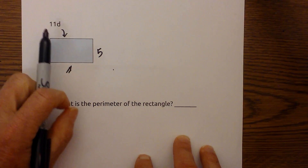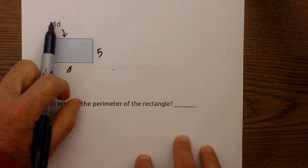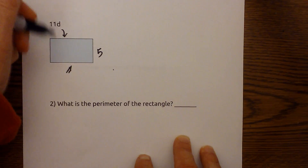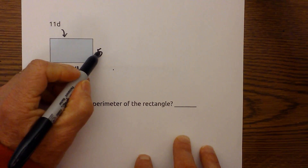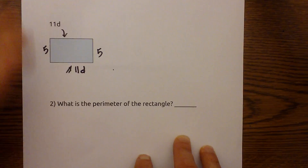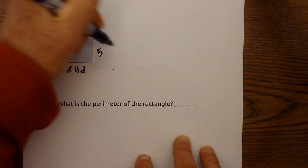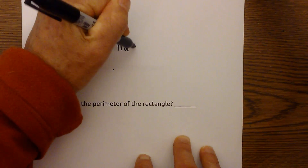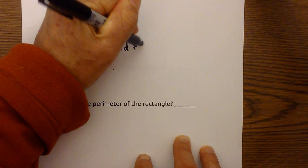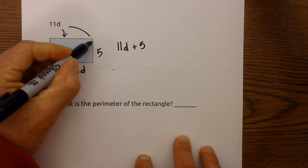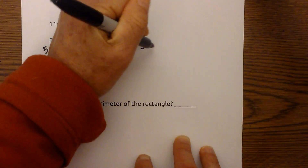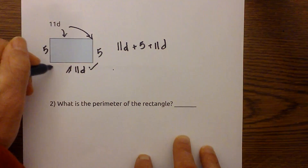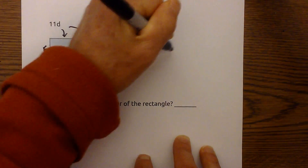With a rectangle, the two opposite sides are equal. So we can fill in 11d on the opposite side, and move the 5 to the other side. Now we have 4 numbers to add: 11d plus 5 plus 11d plus 5.